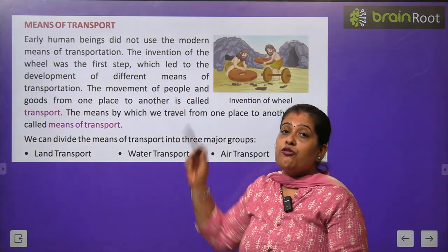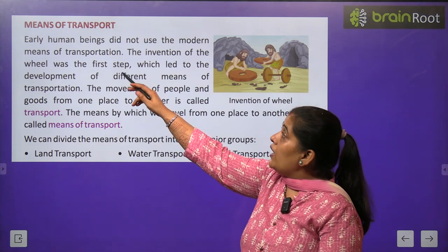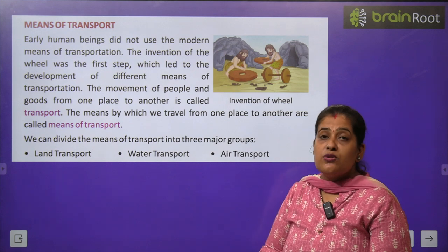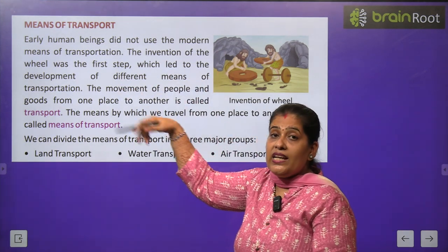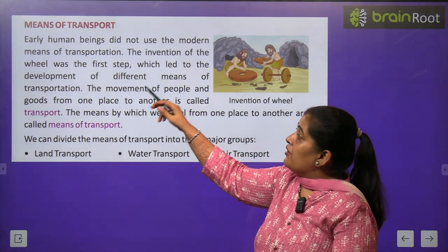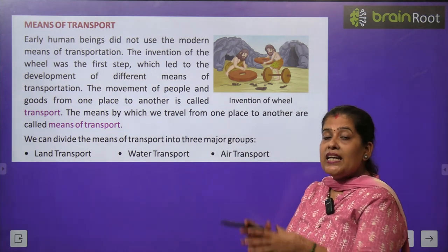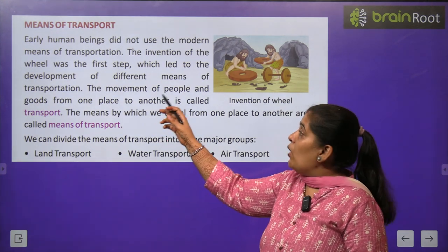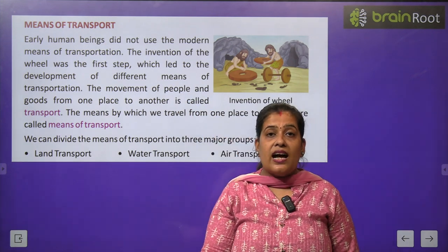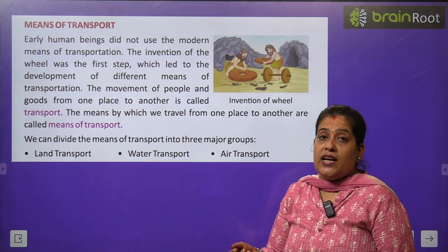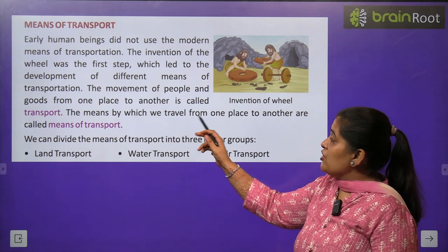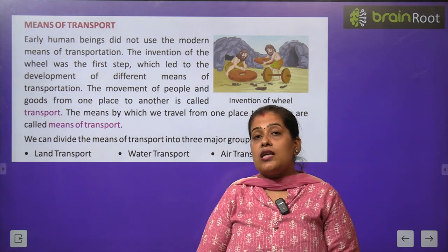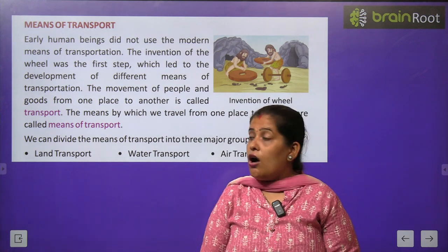Now we will learn about means of transport. Early human beings did not use modern means of transportation. आदि मानव ने wheel — पहिये का अविष्कार किया, which led to the development of different means of transportation. The means by which we travel from one place to another are called means of transport. Means of transport को तीन भागों में बाँटा गया है: land transport, water transport, और air transport।